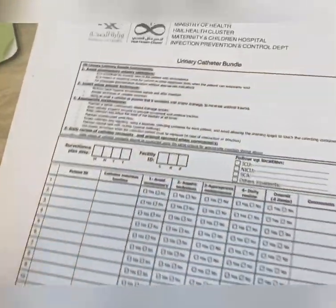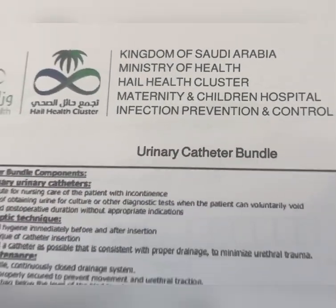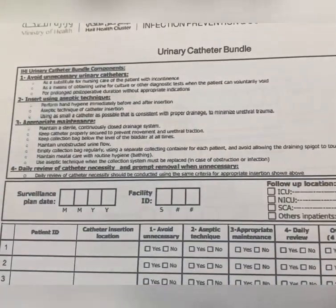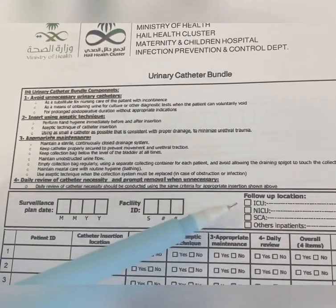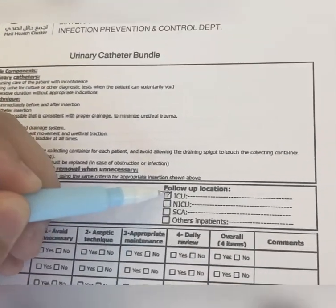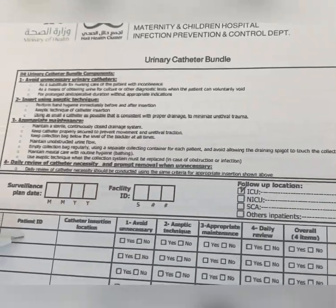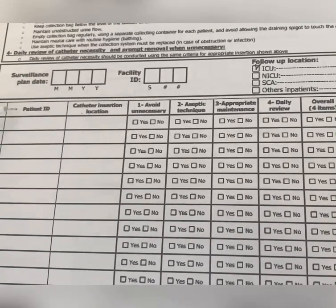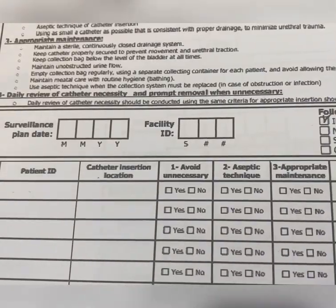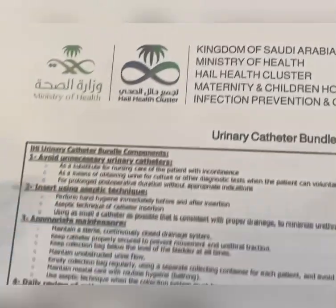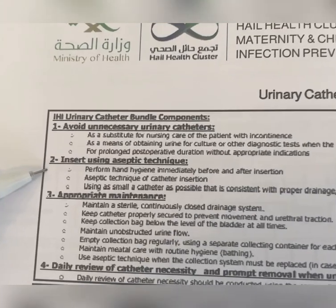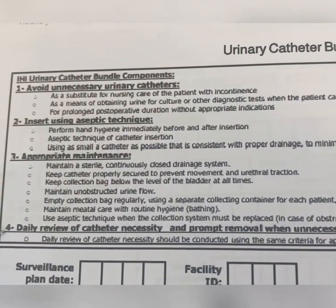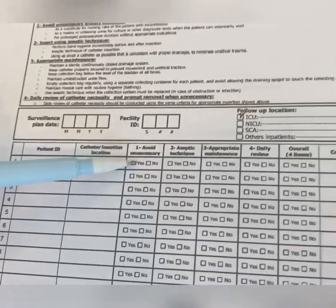For the urinary catheter bundle form, write the surveillance plan date and month, then the follow-up location — for example, if inserted in MAT1, the follow-up is in ICU. Write the patient ID and catheter insertion location. Follow these four bundle variables: avoid unnecessary urinary catheters, insert using aseptic technique, ensure appropriate maintenance, and perform daily review of catheter necessity. Tick yes for each and complete the form daily.